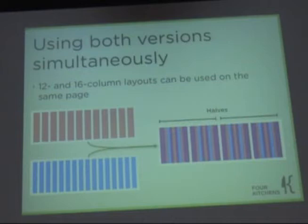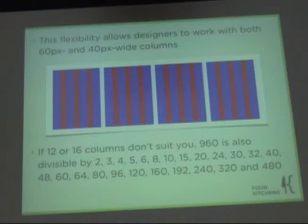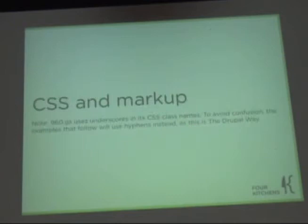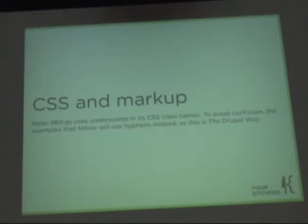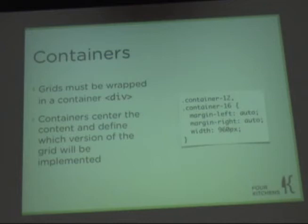One thing 12 allows you to do that 16 doesn't is split things out into multiples of three — halves, quarters, and thirds. Apologies to those who don't like underscores — I didn't code it thinking Drupal was going to pick up and run with it. I used underscores because for my own brain that's what worked. The Drupal way has dashes instead of underscores. So in all the examples here we're going to use dashes, even though if you download 960gs you're going to see underscores.